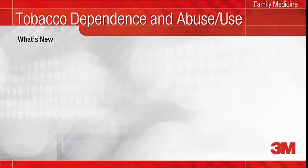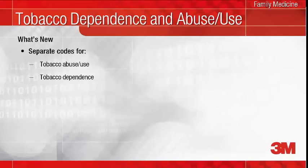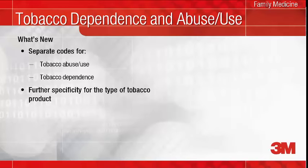ICD-9 provided a single code for tobacco abuse and dependence without differentiation and without further specificity for the type of tobacco product. ICD-10 provides separate codes for these. If your intended diagnosis is dependence, dependence is what you should document rather than abuse. According to the Centers for Disease Control and Prevention, most smokers are dependent and nicotine dependence is the most common form of dependence in the U.S. Additionally, further specificity is provided in ICD-10 for the type of tobacco product dependence as cigarettes, chewing tobacco, or other — for example, cigars — so this should be documented as well.